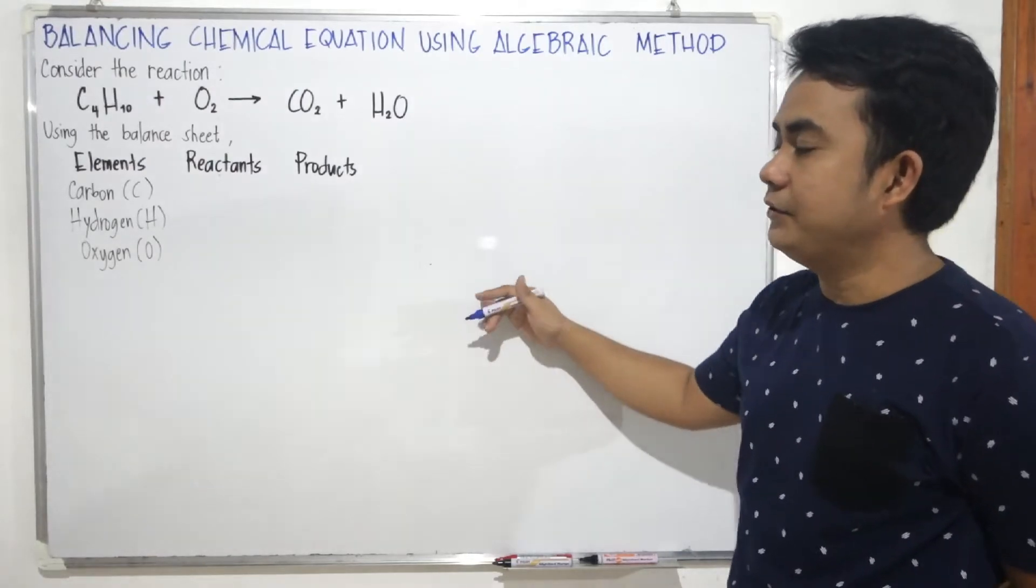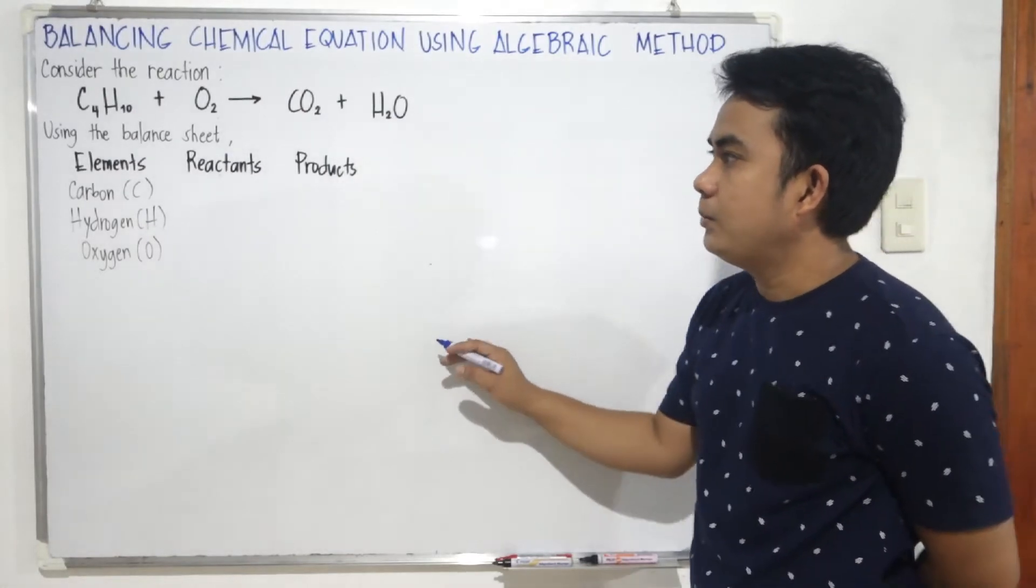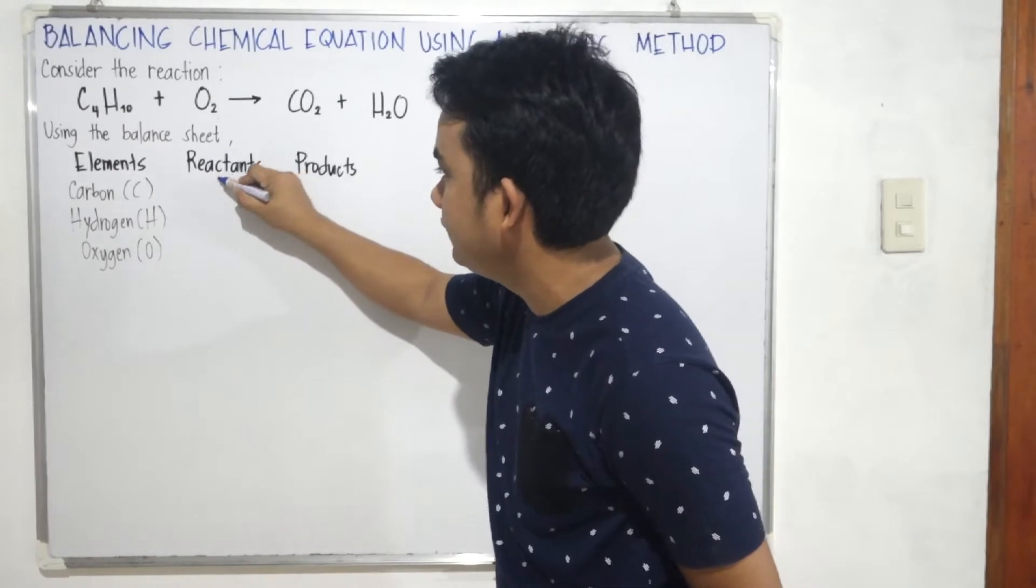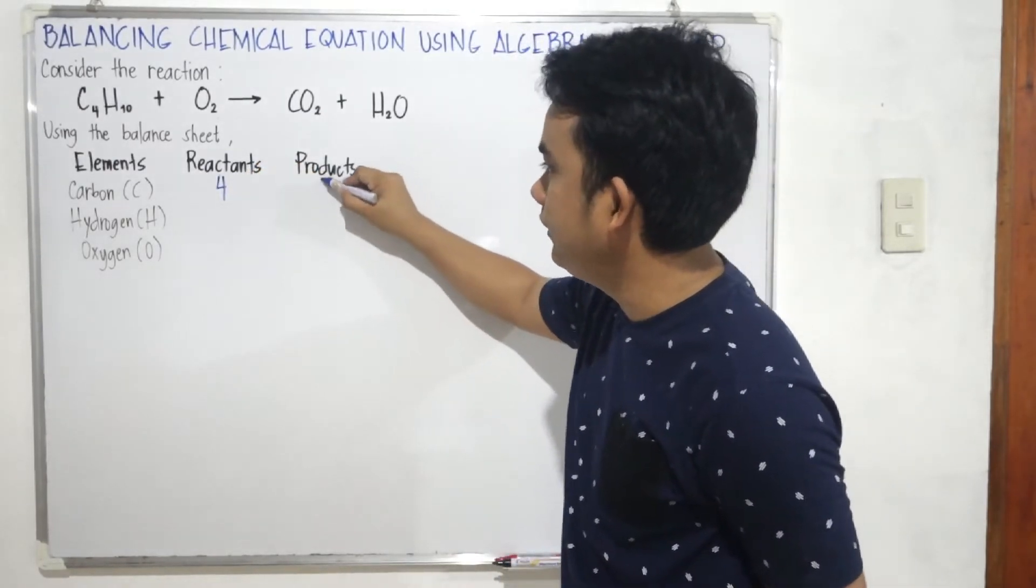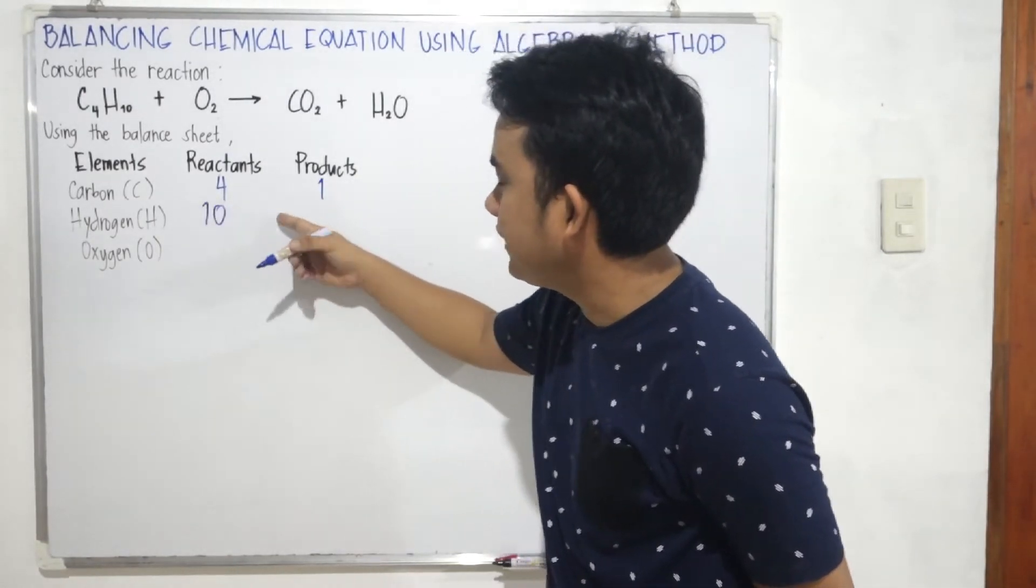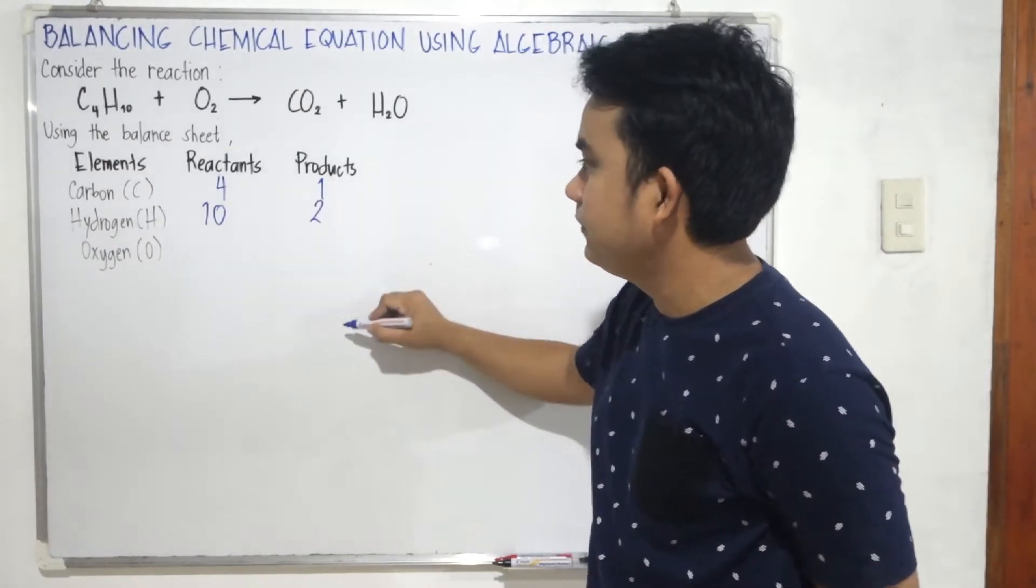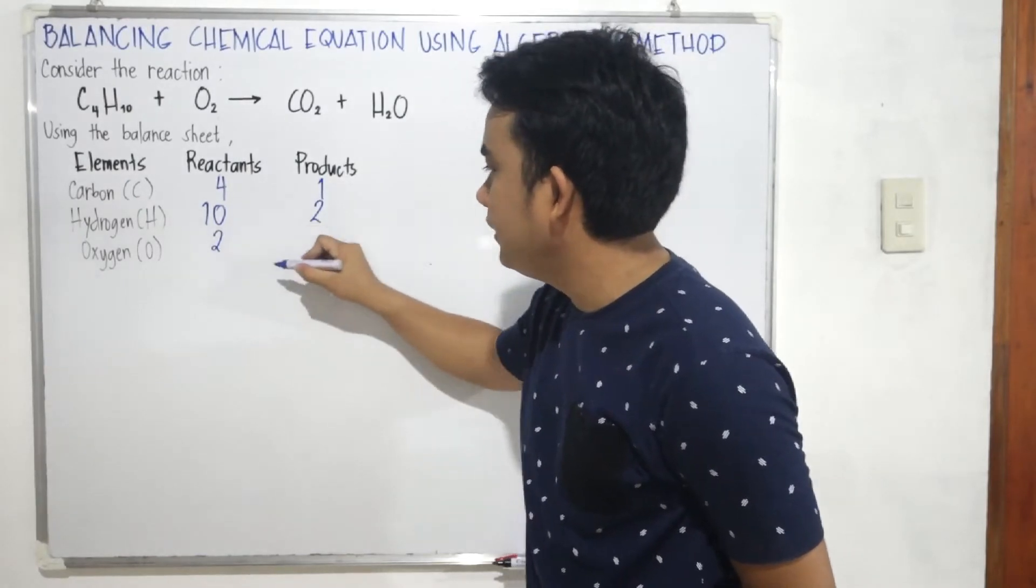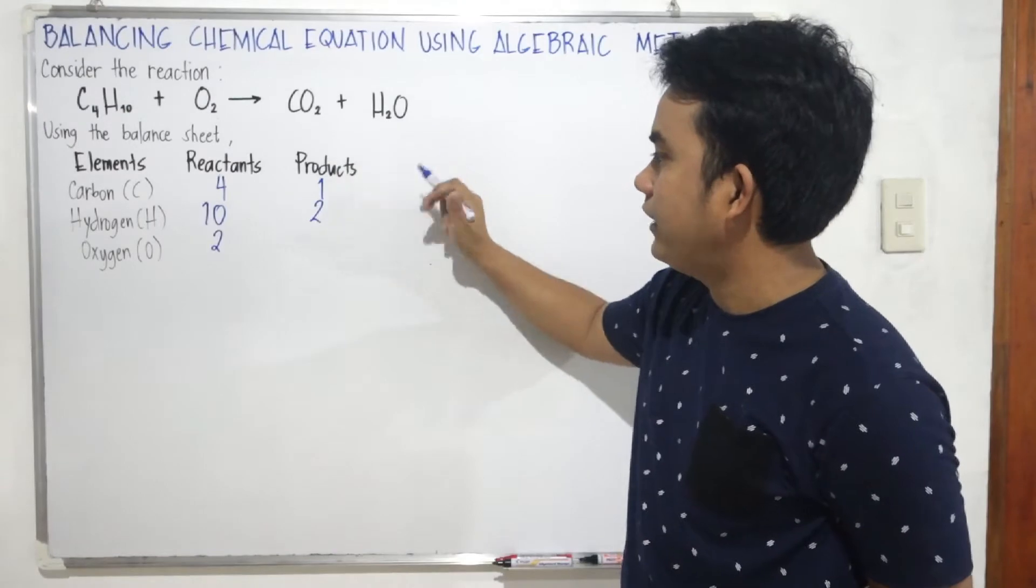Let's check the standing of the number of atoms in each element. So, we have three elements: carbon, hydrogen, and oxygen. For the reactant side, the carbon is 4. For product, we have 1. For hydrogen, we have 10 in reactants, and in product we have 2 atoms. For oxygen in reactant side, we have 2. And on the product side, we have 2 plus 1, which is 3.